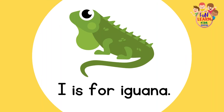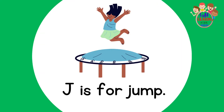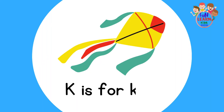I is for Iguana. J is for Jump. K is for Kite.